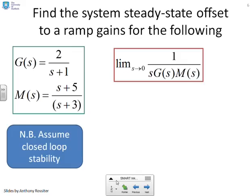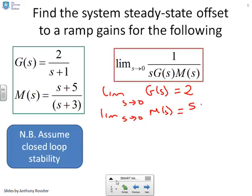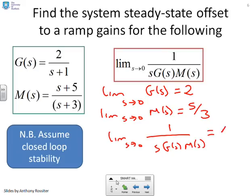Example: find the steady state offset to a ramp for g(s) = 2/(s+1) and m(s) = (s+5)/(s+3). The limit as s goes to 0 of g(s) is 2, and the limit of m(s) is 5/3. Therefore the limit as s goes to 0 of 1 over s·g(s)·m(s) is infinite, because 1/s blows up while g and m give finite values. There is no integrator in g or m, so if you want to track a ramp you cannot — the error grows without bound.